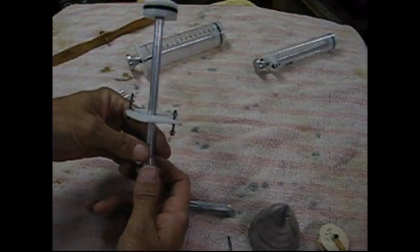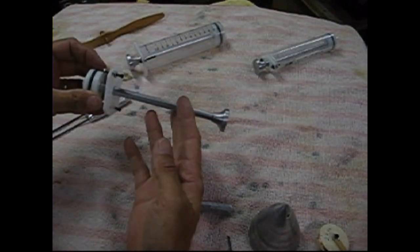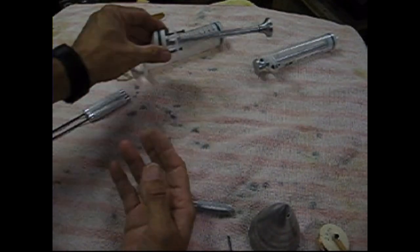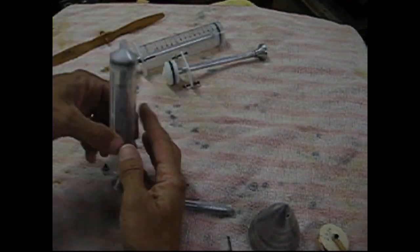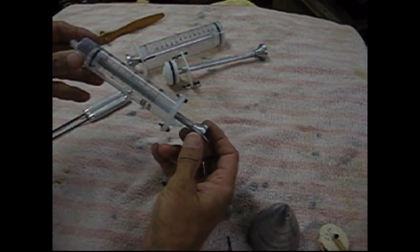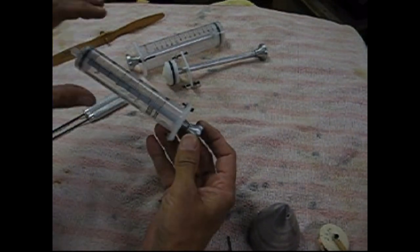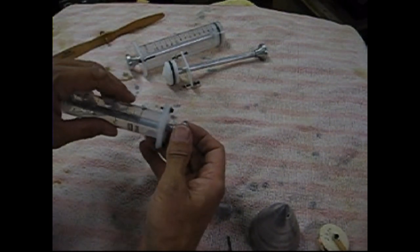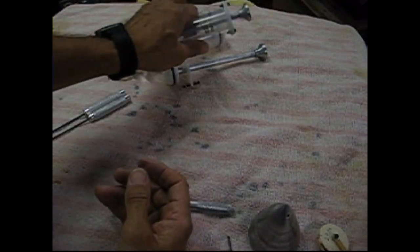We also have the guts for this available by themselves. And then we have the two-ounce syringe, which is just like its big brother except a little bit smaller. These come complete only. I don't have the innards available separately for those.